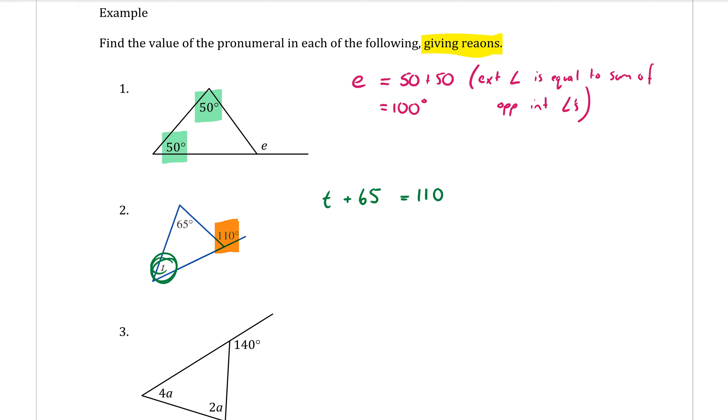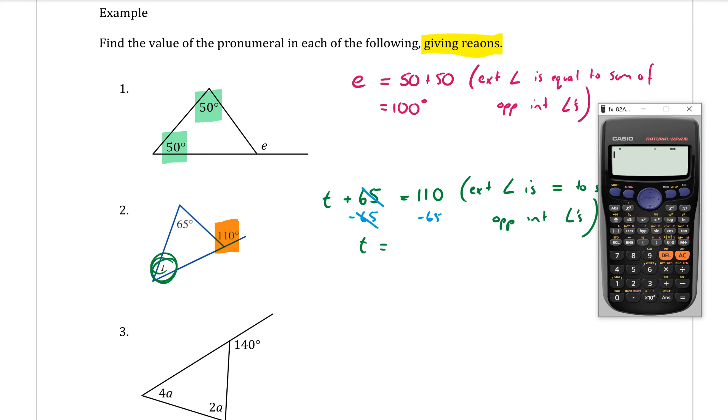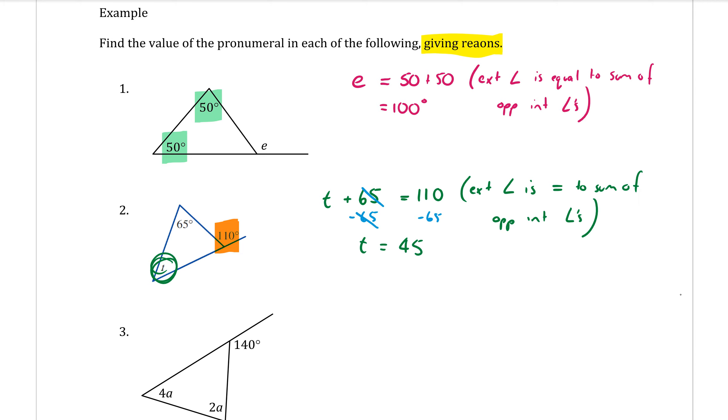This is still using the exterior angle rule. To write it down, exterior angle is equal to the sum of the opposite interior angles. Now you could use the equal sign to make it shorter. To find T, we want to get rid of that 65. So doing the opposite, I subtract 65 from both sides. T will now be by itself, and we need to calculate 110 take away 65, which gives us 45 degrees for T.